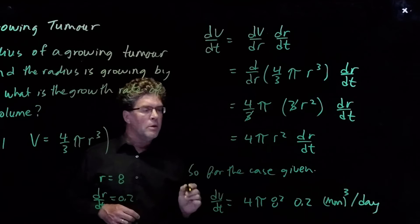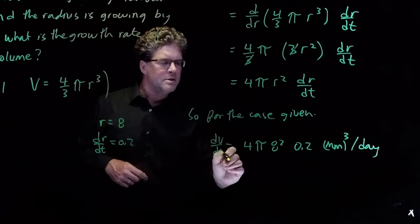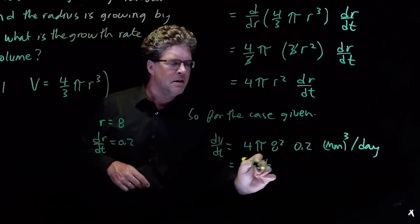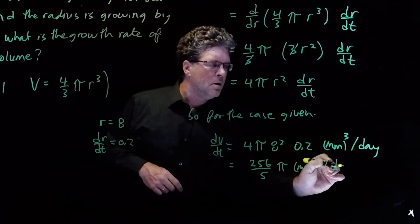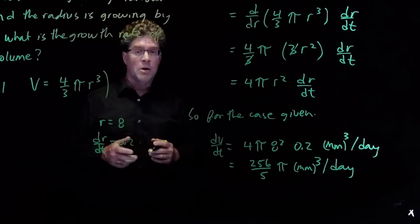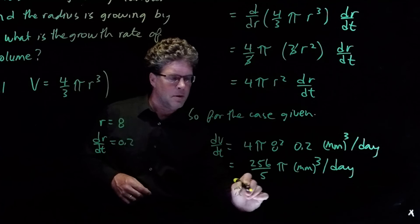And so if we look at the numerator, that's 4 times 64 times 0.2. So we'll write that as 4 times 64 is 256, and divided by 5 times pi millimeters cubed per day. And that turns out to be somewhere around 160 cubic millimeters a day.